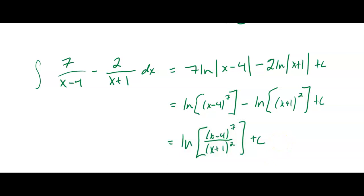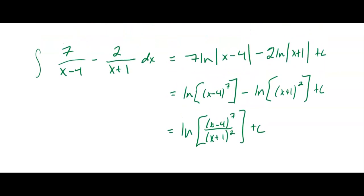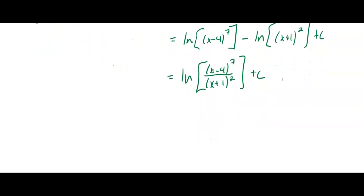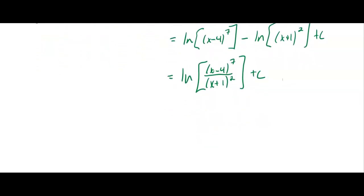All right, what do we got next? Okay, so similar, I'm going to throw some u sub into an ln. So I'm going to give you the integral of fraction bar top 2x plus 3, bottom x squared plus 3x plus 4 with a dx on the outside. So go ahead, hit pause and do this u sub ln problem.